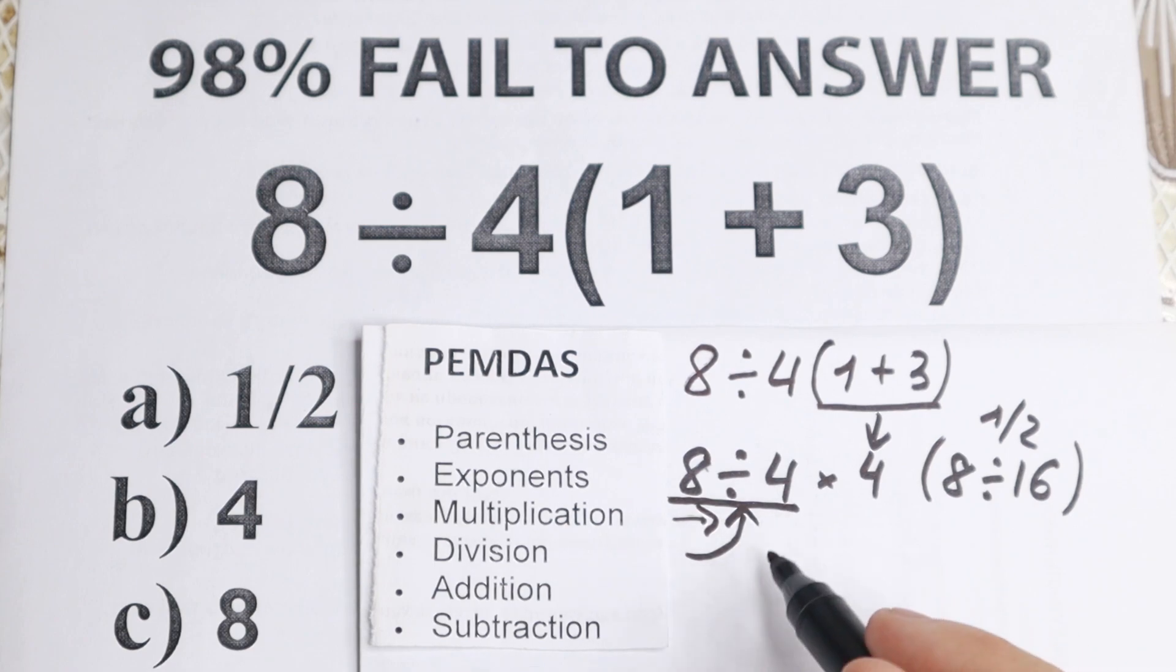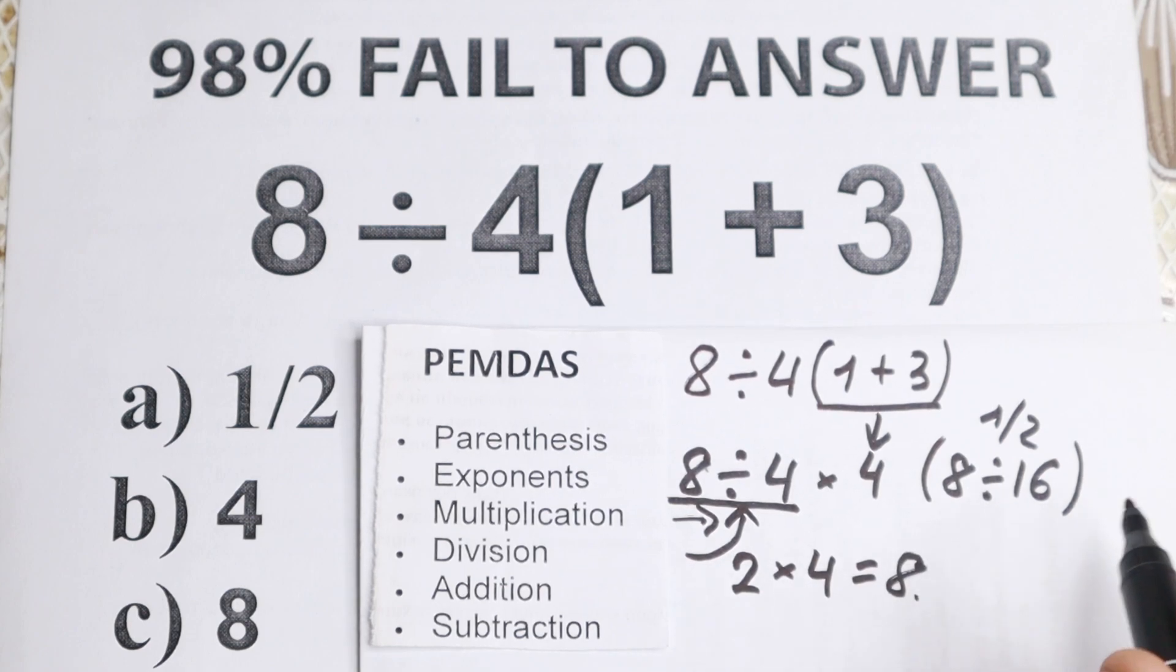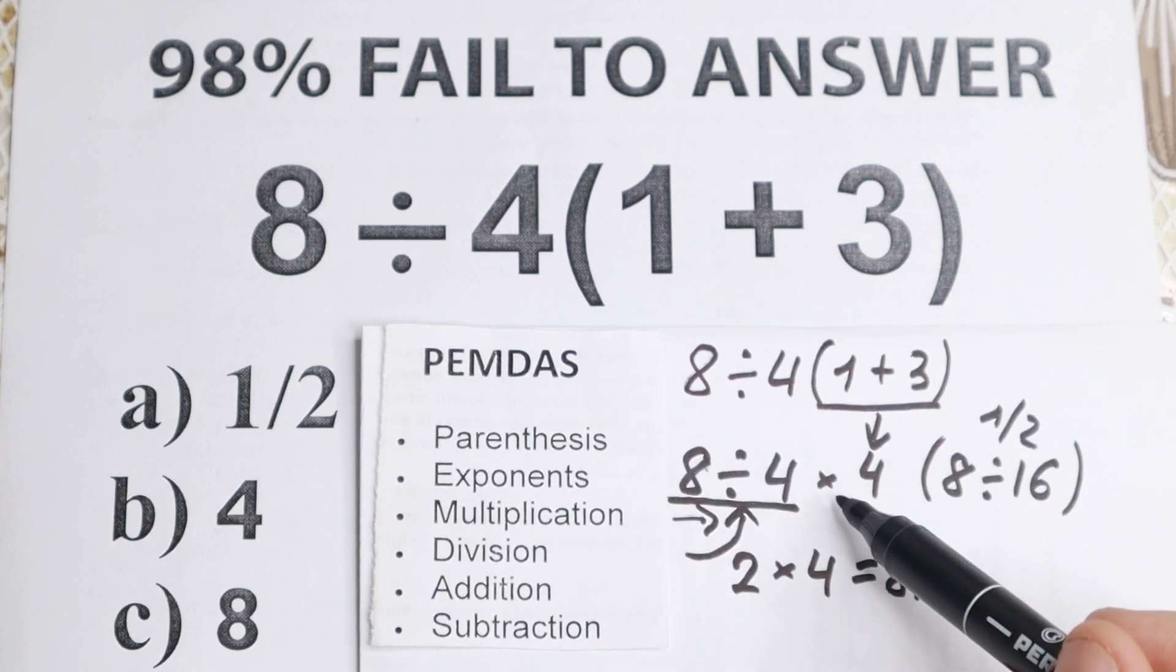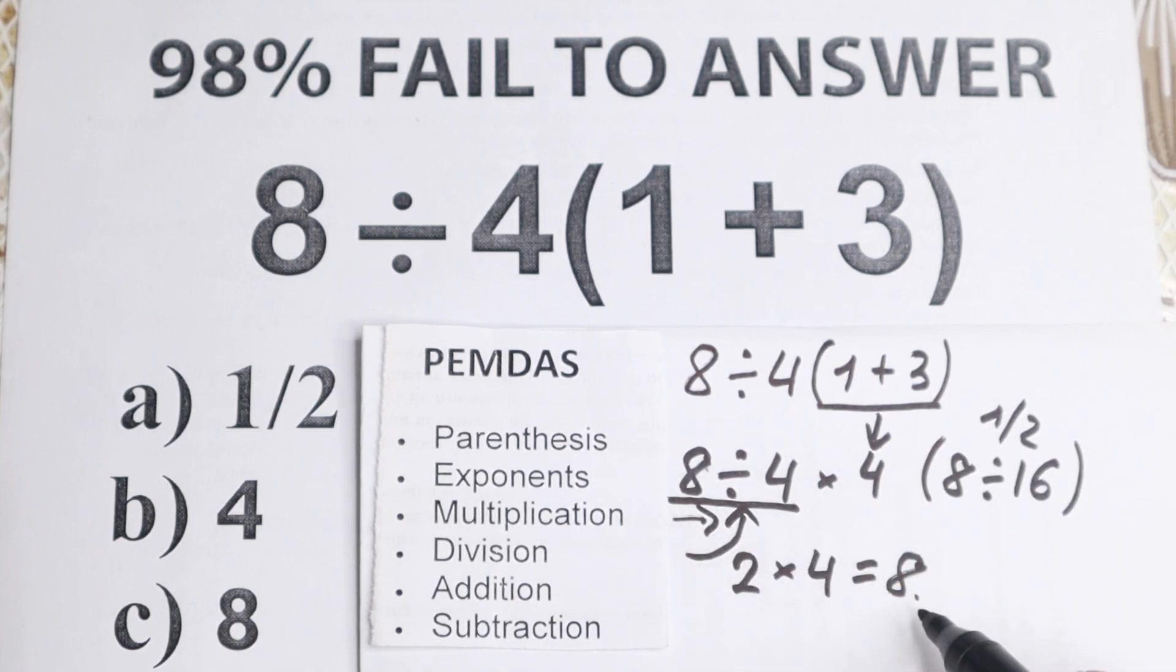Okay, 8 divided by 4 equal to 2, and 2 times 4, the last step equal to 8. So as you can see, if you start from multiplication you will get one half, which is option A, but if you start from this division you will have option C, 8.